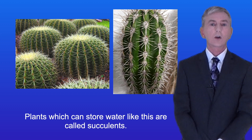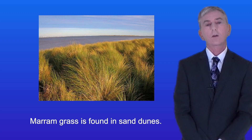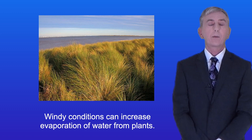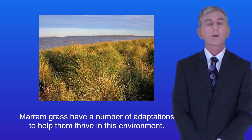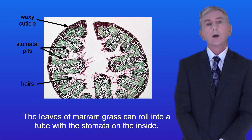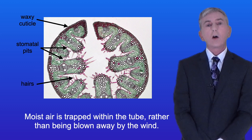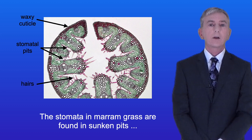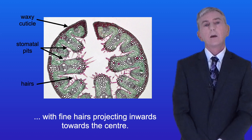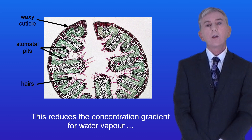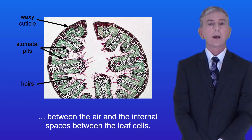Marram grass is found in sand dunes, where water is scarce and windy conditions can increase evaporation of water from plants. Marram grass has a number of adaptations to help it thrive in this environment. The leaves of marram grass can roll into a tube, with the stomata on the inside, trapping moist air within the tube rather than being blown away by the wind. The stomata in marram grass are also found in sunken pits, with fine hairs projecting inwards towards the centre. These adaptations ensure that moist air is trapped around the stomata, reducing the concentration gradient for water vapour between the air and the internal spaces between the leaf cells, and reducing the rate of diffusion of water vapour out of the stomata.